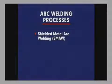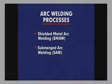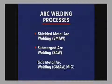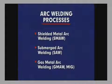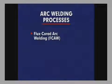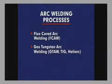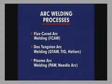Arc welding encompasses a variety of processes, the primary types being shielded metal arc welding, submerged arc welding, gas metal arc welding, flux cord arc welding, gas tungsten arc welding, and plasma arc welding.